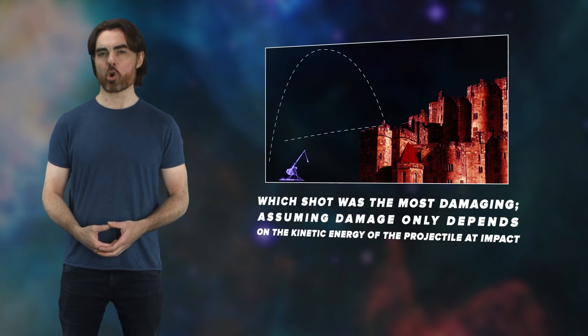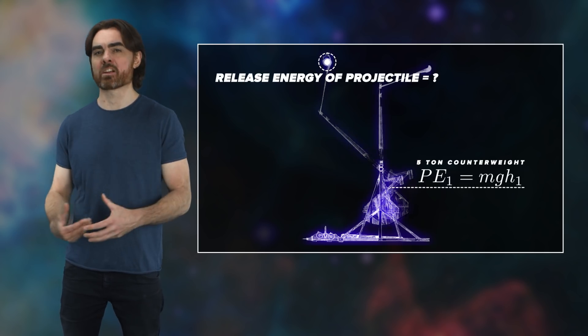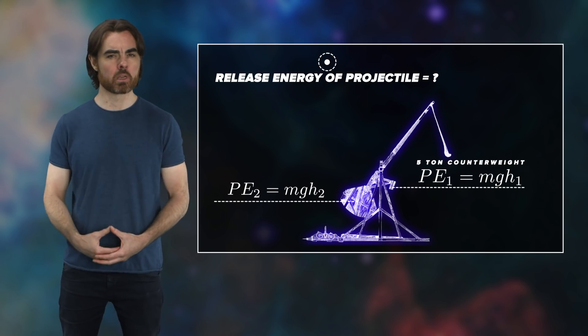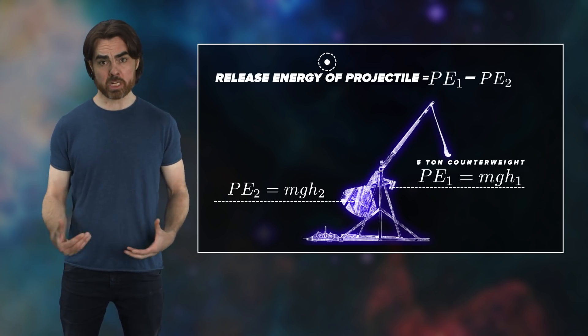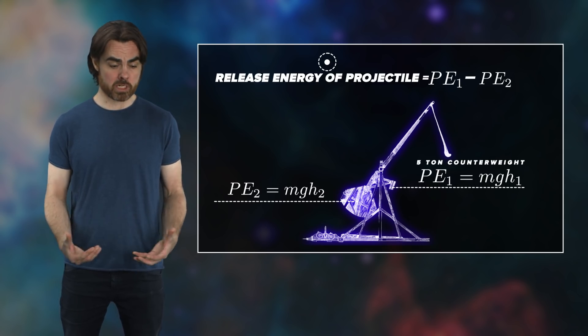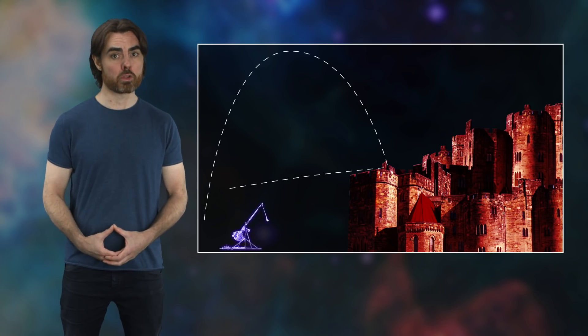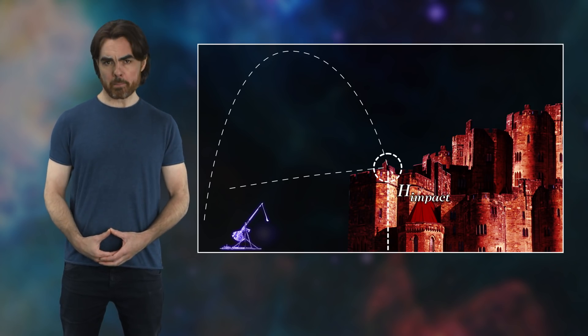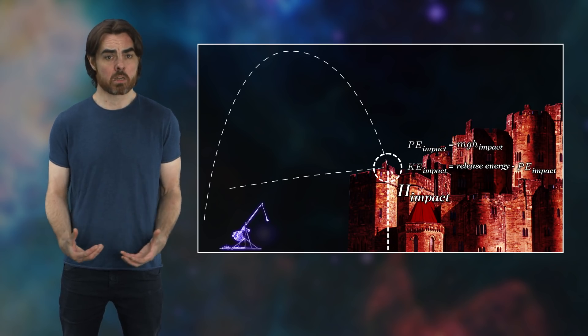To answer this, we need to know how much of the counterweight's starting potential energy ends up in the projectile. We know that the counterweight's height in both shots was the same at the start and at the end of the swing. At both of these points, the weight is momentarily still. It has no kinetic energy, and so all of its energy is in potential energy. So the energy it lost to the projectile is just the difference between these potential energies. That's the same for both shots, so both gave the projectile the same total energy. We don't know anything about the kinetic or potential energies at the moment of release, but we do know that the final potential energies of the projectile in both shots were the same because they hit the wall at the same height. That means the projectile's kinetic energies at the point of impact must also be the same. And as long as they had the same mass, their speeds would be the same too.